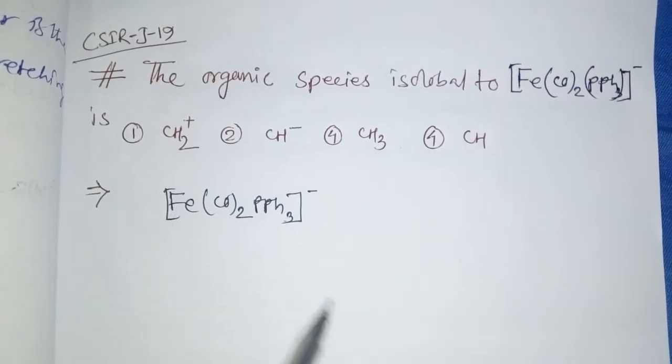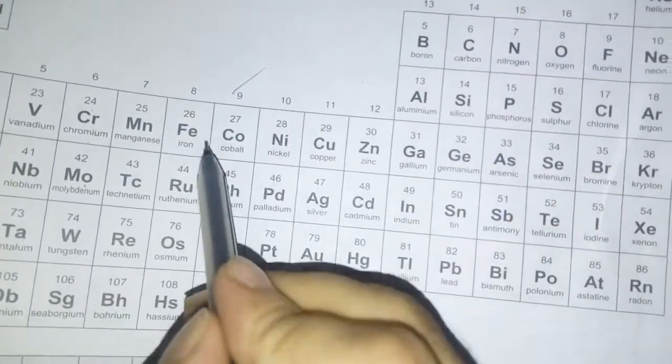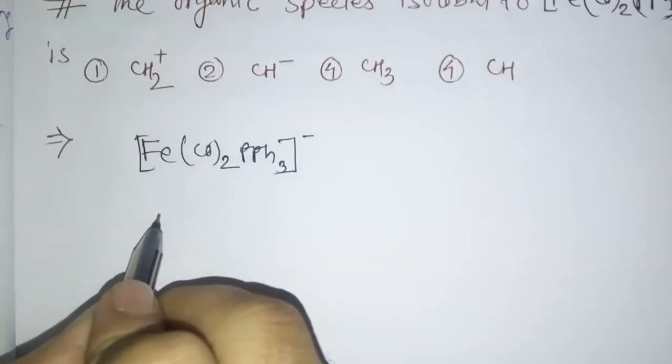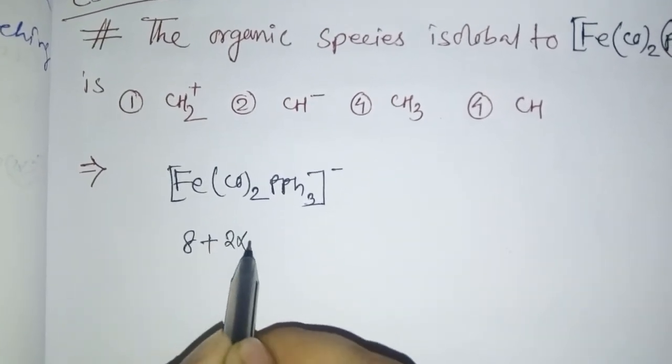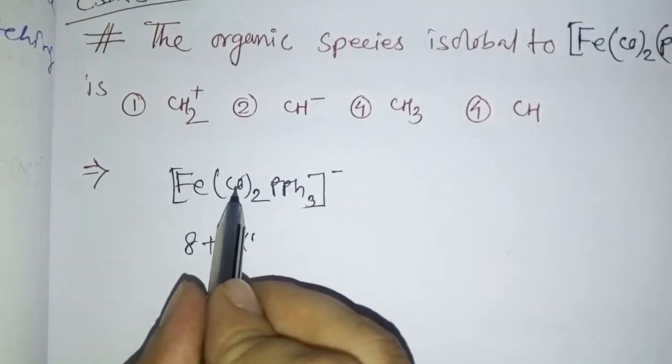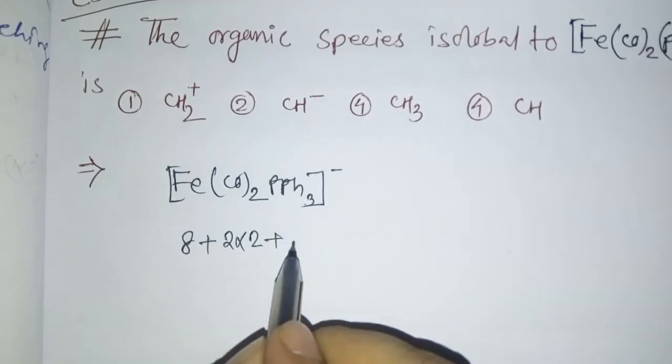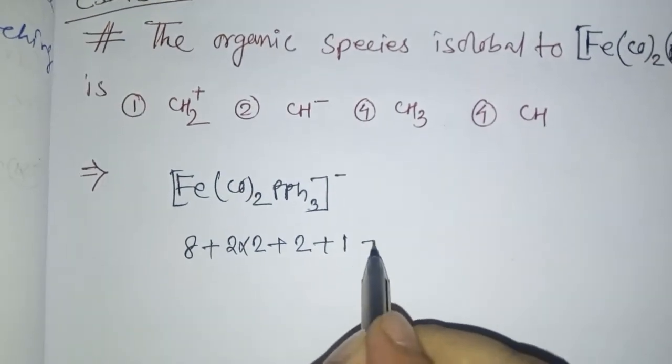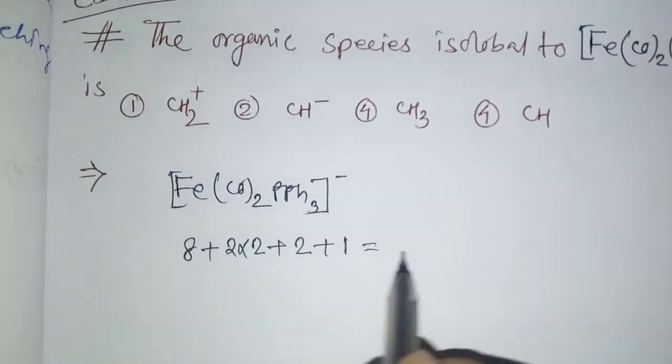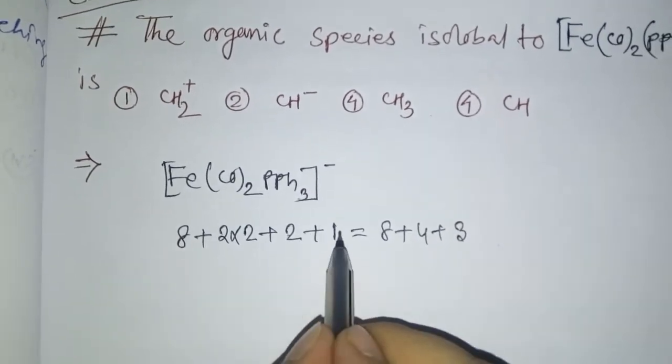First, let's find the valence electrons for this iron complex. Iron has 8 valence electrons. Then we have 8 plus carbonyl contributions plus charges minus 1. So we get 8 plus 4 plus 3, which equals 12, 13, 14, 15 total valence electrons.